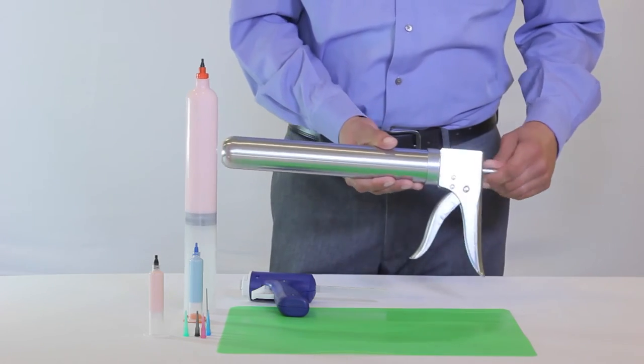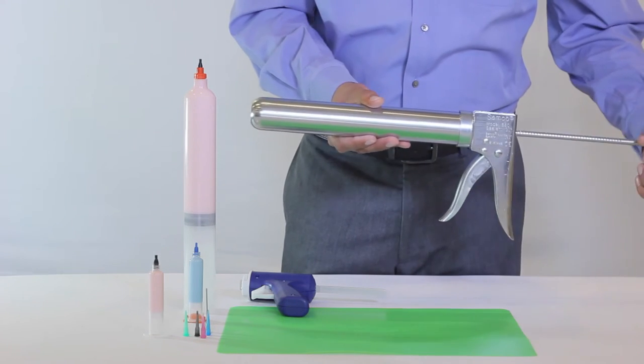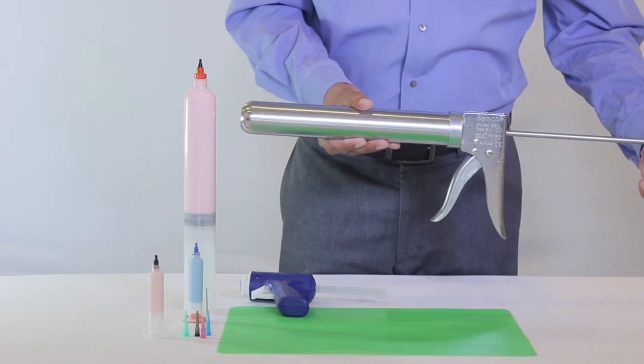Begin by maneuvering the metal rod so that the teeth are facing up. This will allow the rod to disengage so that the cartridge has the space to be inserted.